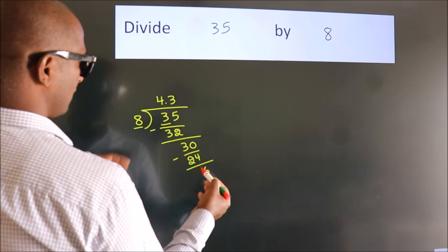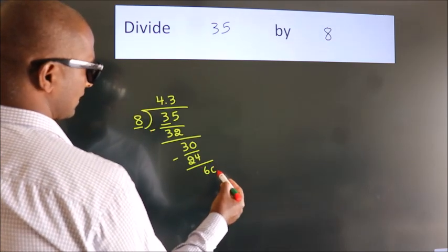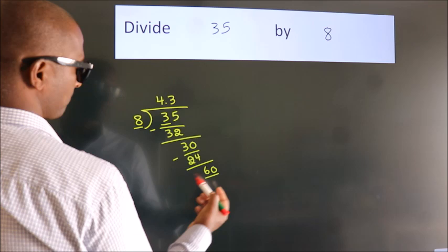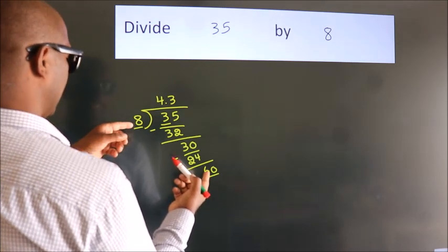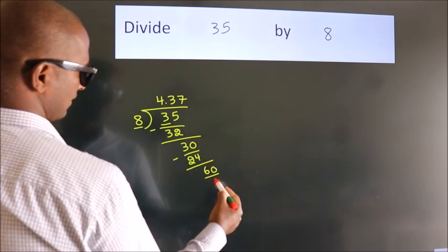After this, we already have the decimal, so directly take 0. So, 60. A number close to 60 in the 8 table is 8 sevens, 56.